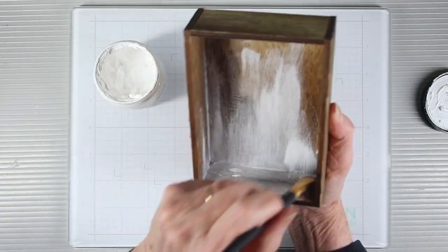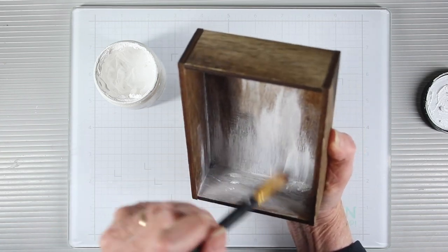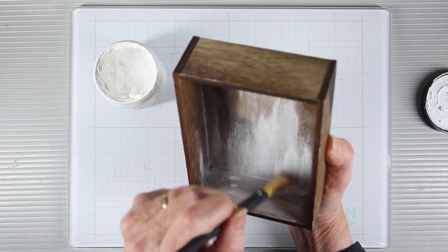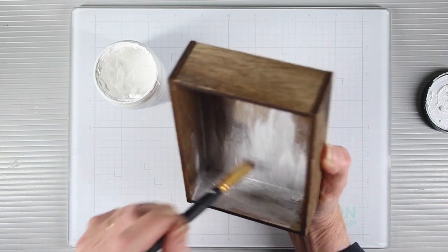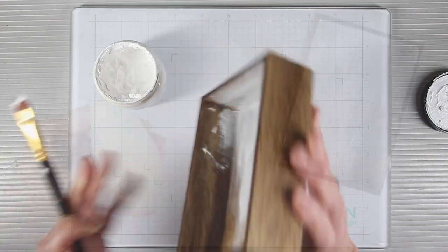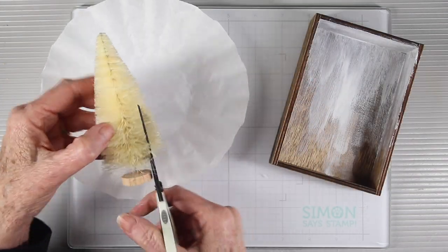For the gesso I'm just applying a heavier coating at the top and right now it looks like the bottom and I'm pulling it up to get those random brush strokes.